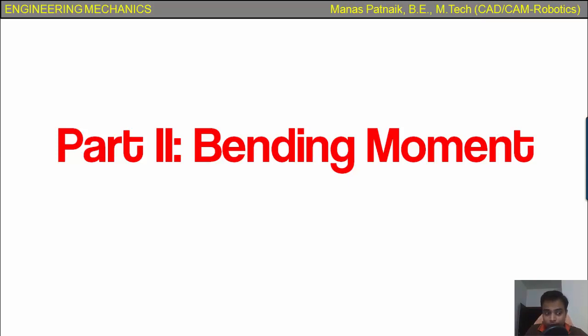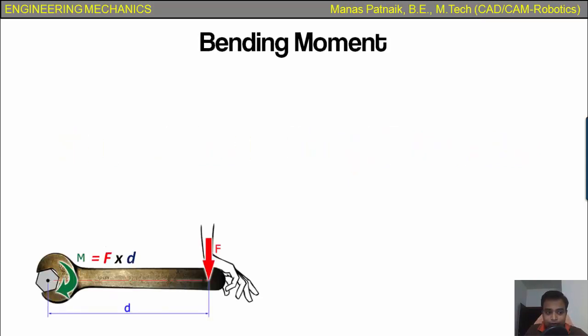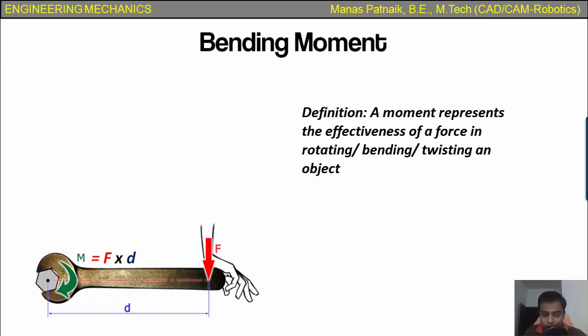To understand bending moment, we first need to learn what exactly moment means. Whenever you turn something, you need a force and of course a pivot. If you try to push further away from the pivot, then you're able to turn the object more easily.